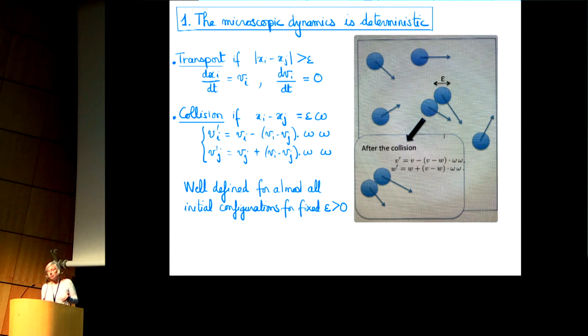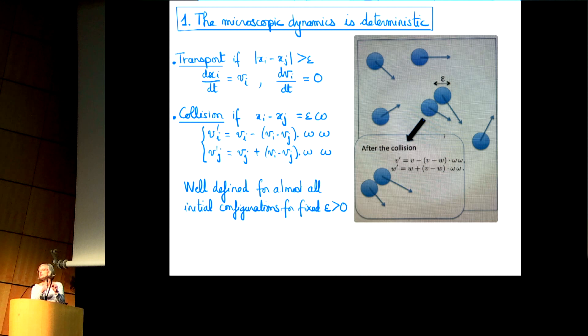What I would like to discuss is connected to spontaneous stochasticity, but I will refrain from using this terminology because I don't know exactly the precise general definition of this notion. What I would like to discuss is how noise emerges in deterministic systems. The system I will consider is a very simple model for a gas: you just assume that all the elementary particles are spheres transported with free transport until they collide with another sphere.